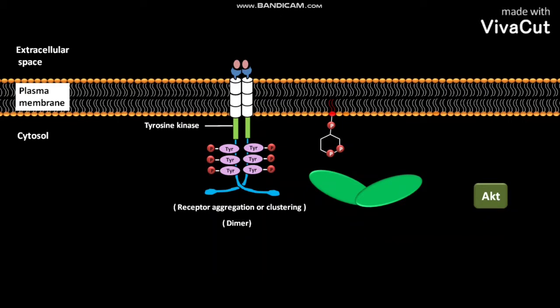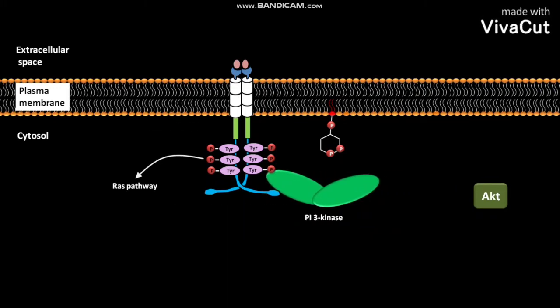The active receptor tyrosine kinases trigger simultaneously the RAS pathway and other pathways. Now let us take an example of other pathways triggered by active receptor tyrosine kinases, that is the PI3K-AKT pathway. In this pathway, first the inactive PI3 kinase comes in contact with the phosphorylated tyrosine kinases found in the active receptor tyrosine kinases. As a result, the inactive PI3 kinase becomes active.